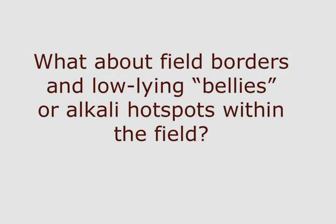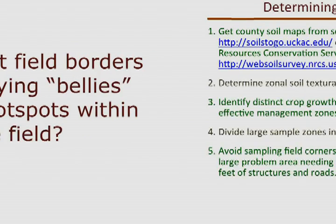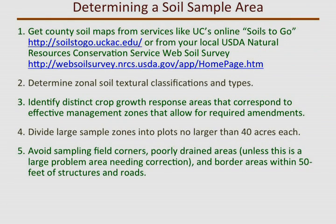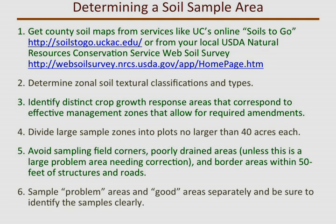Typically, you want samples from at least every 40-acre block. What about field borders and small low-lying bellies or alkali hot spots within the field? Avoid these areas unless they represent a large acreage that you can actually correct. Sample so-called problem areas like poor drainage, poor plant growth response, and good areas separately for comparison purposes.